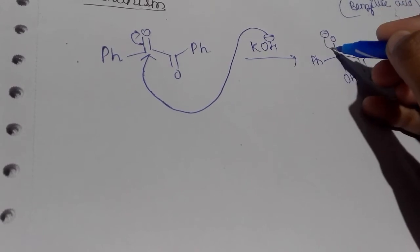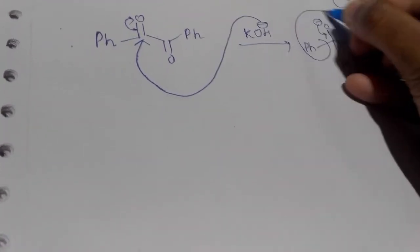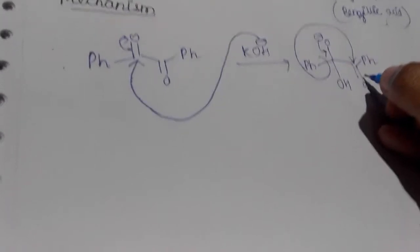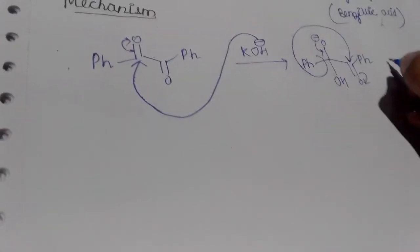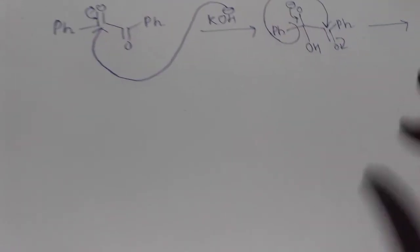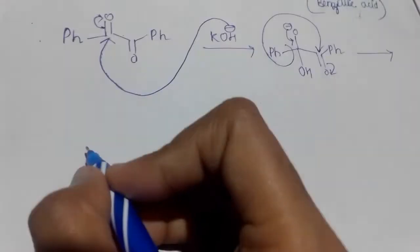OH comes and attaches over here, so this negative again comes back to this position and what happens is that this phenyl group goes and attacks here and then this oxygen, this one again breaks like this.